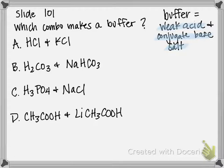For option A, let's look at the first component, HCl. If we look at our chart, HCl is a strong acid. So right off the bat, this is a no-go. This would not make a buffer. We don't even have to look at the second component.